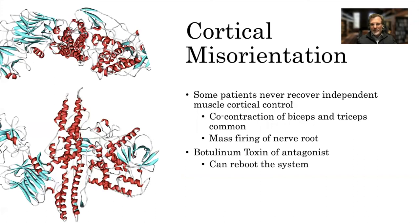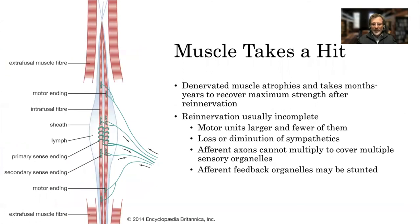There's also cortical pruning and reassignment. For cortical misorientation, some patients never recover independent muscle cortical control — co-contraction of biceps and triceps is common in brachial plexus injuries, with mass firing where axons don't end up where they were before. Botox of the antagonist sometimes can reboot the system. Denervated muscle atrophies and takes months to years to recover maximum strength after re-innervation, which is usually incomplete. Motor units from re-innervation are larger but fewer. There's also loss of sympathetics, which support muscle function, and afferent axons cannot multiply to cover multiple sensory organelles.